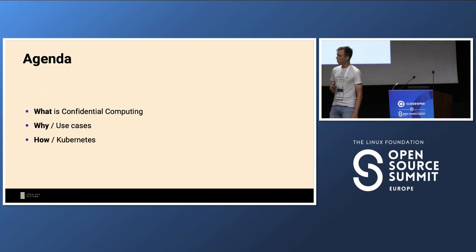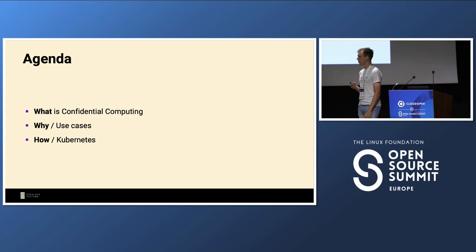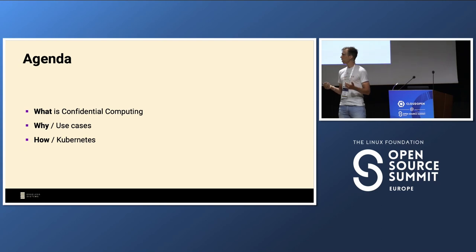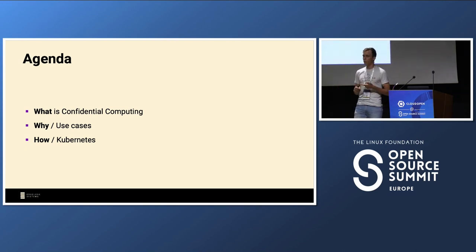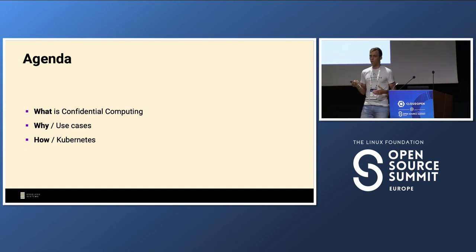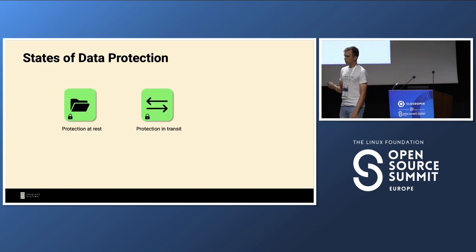What I'd like to talk about today is first giving an introduction — I know there have been two other talks on confidential computing here, so you may be familiar with it, but I'll give a short intro on the fundamentals. Then we'll focus on the threat model and use cases, and finally a more practical approach on how this fits into our cloud-native, Kubernetes-based world.